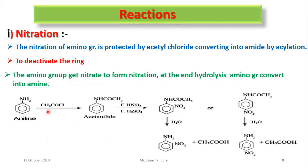Aniline reacts with acetyl chloride to form acetanilide — this is the acylation step. Then nitration of acetanilide gives ortho and para products, but the major product is para-nitroacetanilide. This product is then hydrolyzed using water under hydrolytic conditions; the amide group is converted to the amine group. The final product is mononitroaniline.